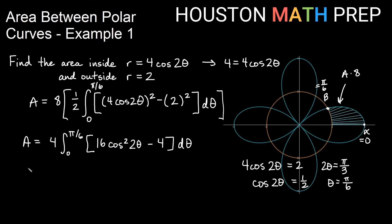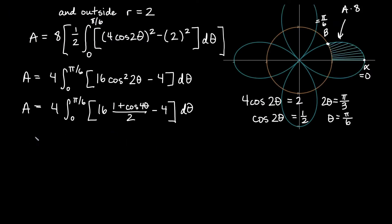Now we have a cosine square term here. Remember we usually reduce that power using a double angle formula. So I'm going to go ahead and do that. We'll think of this as 16 times 1 plus cosine of double the angle. So double this 2 theta would be 4 theta all over 2 minus 4. And I'm going to simplify this a little bit so I don't have the half.